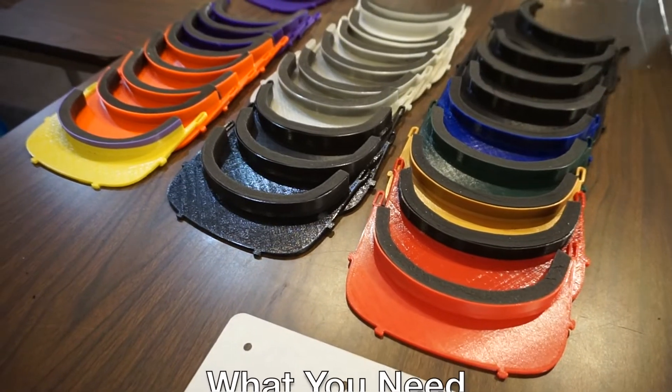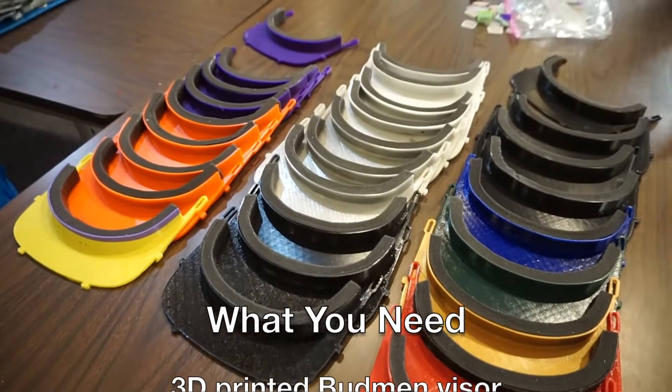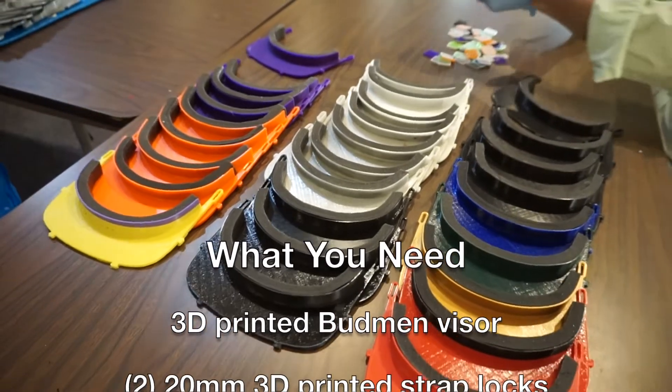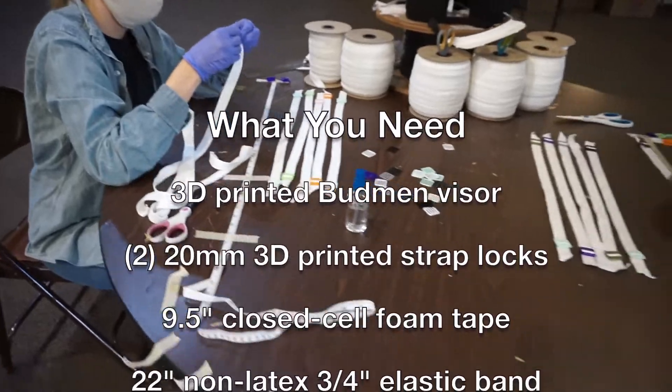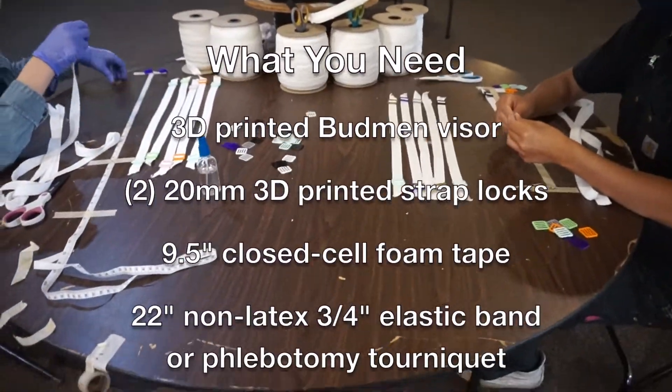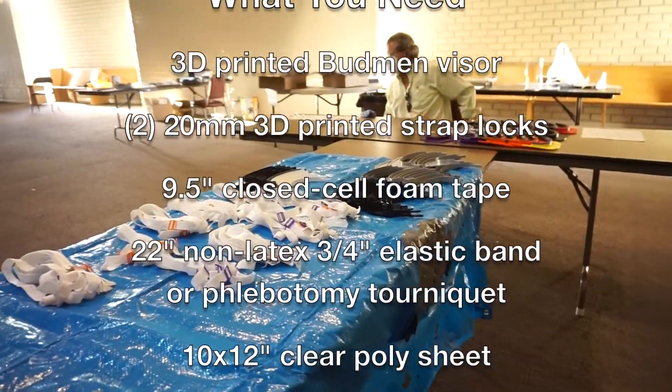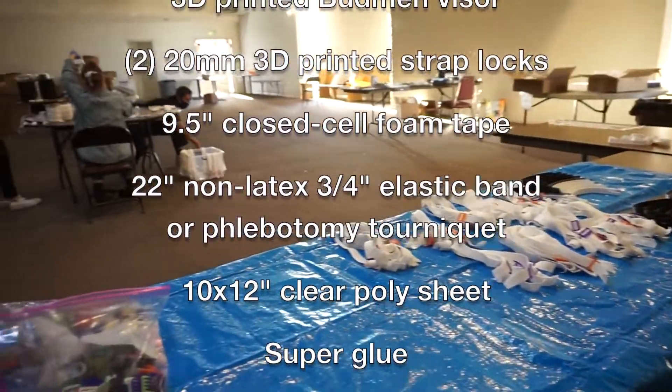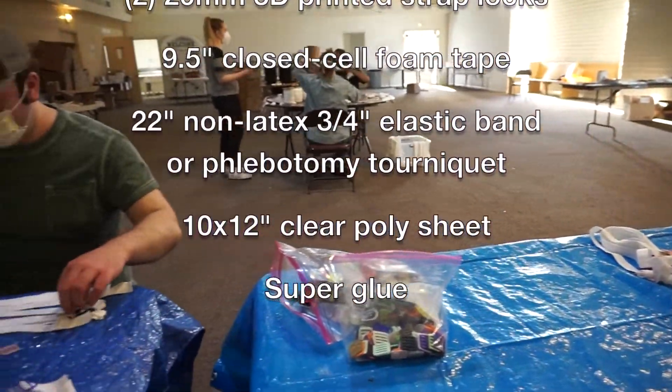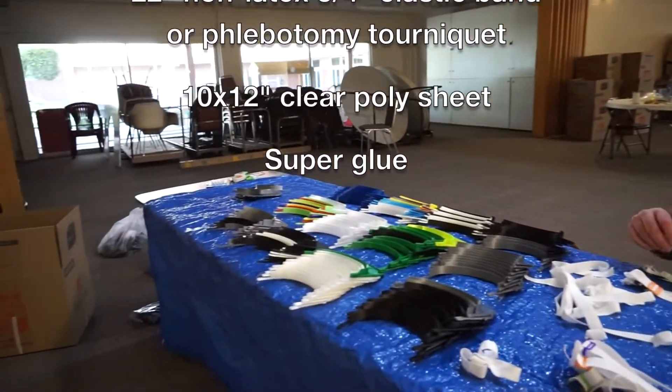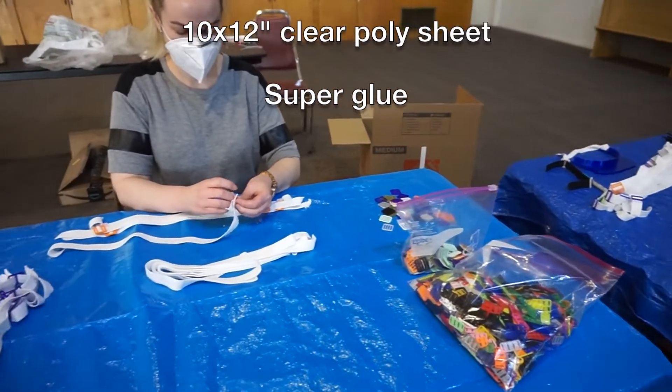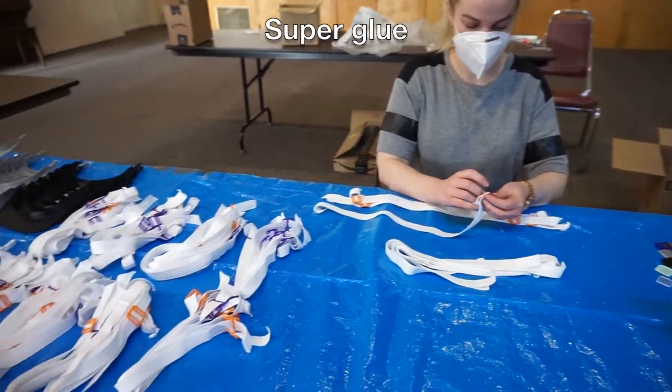The parts you need are the 3D printed visor and two 20mm strap locks, a 9.5 inch piece of closed cell foam tape 3.25 inch wide and 1.5 inch thick, a 22 inch non-latex elastic band 1.5 or 3.25 inch wide or phlebotomy tourniquet, a 10 by 12 inch clear poly sheet cut to the template provided on the Crash Space website, and optionally but recommended, superglue.